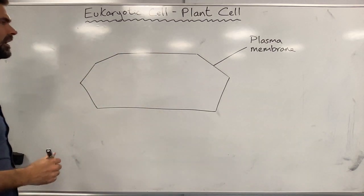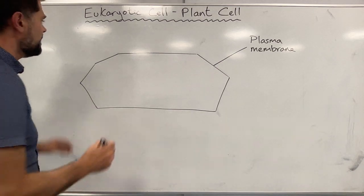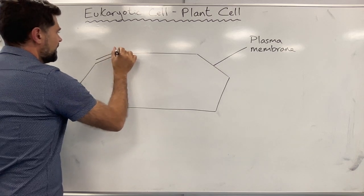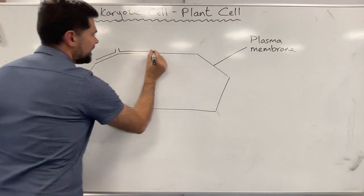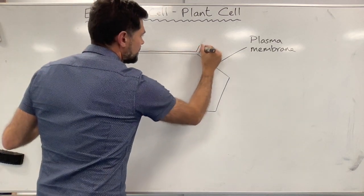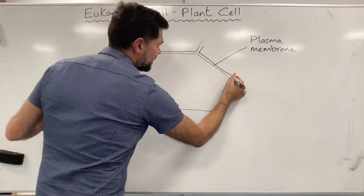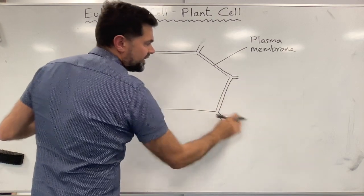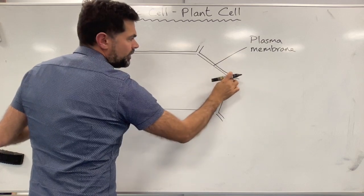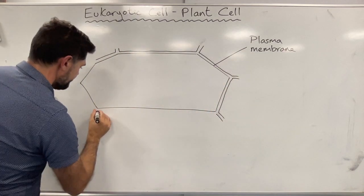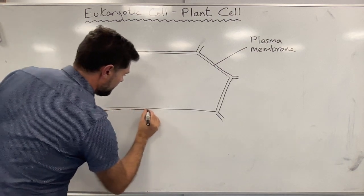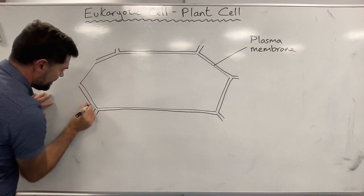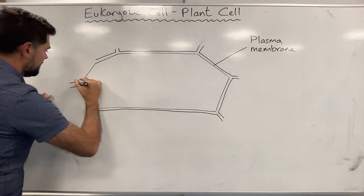Something that plant cells have that animal cells do not have is a cell wall. The cell wall of plant cells is sort of continuous with the cell wall of the cell next to them. The cell wall belongs to both cells. When you draw the cell wall, try and keep the thickness as consistent as you can. You don't need to use a ruler to draw the cell wall because it's not dead straight.